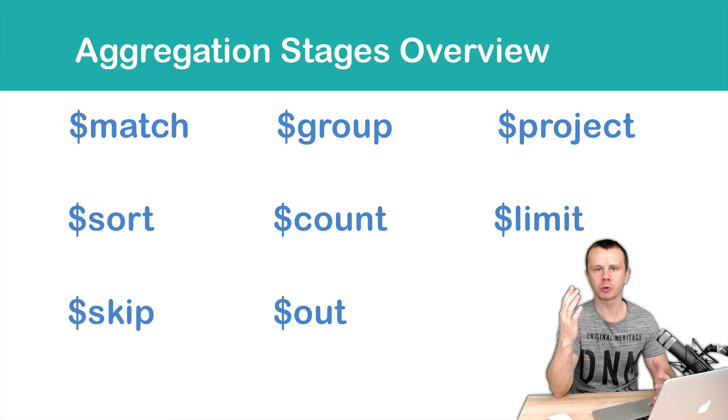Sort sorts objects. Count counts number of objects or documents. Limit limits number of the documents. Skip skips certain amount of documents.